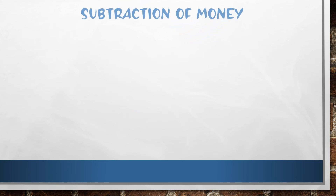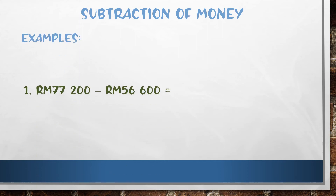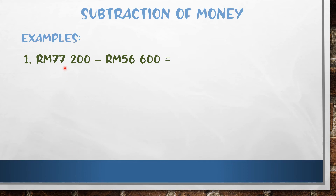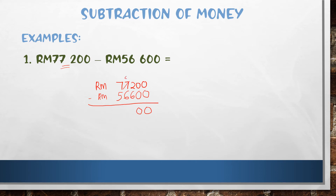Now the subtraction of money, number one. This number minus this number — we use the standard method. You don't need to space when you use the standard method. Write it out, then minus: zero, zero, six, twelve, six, zero, two. Don't forget to write RM. The answer is RM 20,600 ringgit.